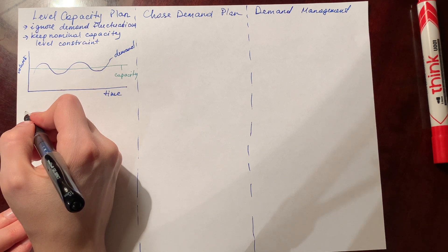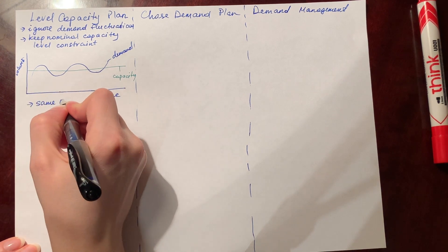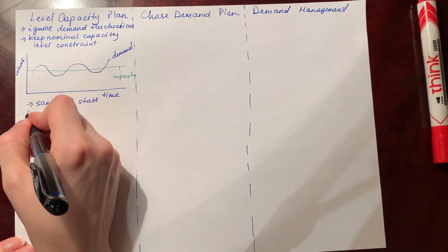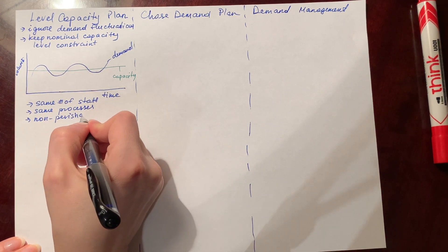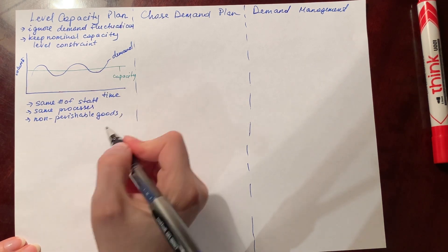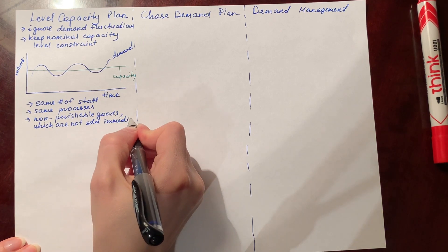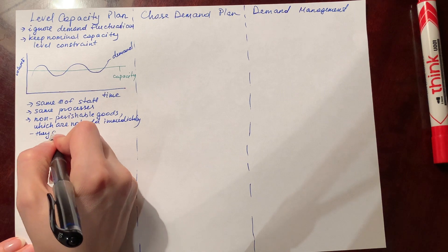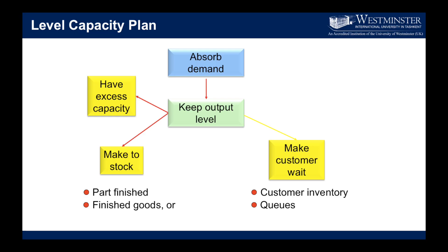Capacity is thus a straight line. In our example of an ice cream business, it would mean to ignore the high demand in summer and low demand in winter and continue producing as much as your capacity allows throughout the year. However, there may be a slight concern because the level capacity plan is suggested for non-perishable goods, and given the fact that ice cream is a perishable good and can normally be stored up to two to three months under the right conditions, this approach is not recommended for this type of business.